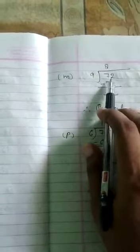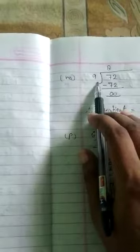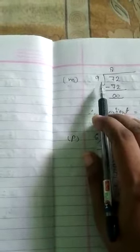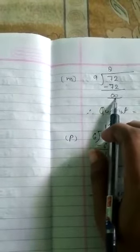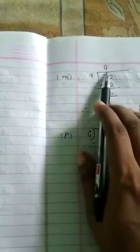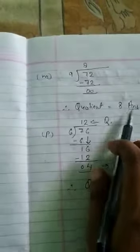Now come to question M. We have to divide 72 by 9. We have to read the table of 9. 9 eights are 72. 72 minus 72 cancel out. So 8 is the answer. 8 is the quotient. Therefore quotient is equal to 8.